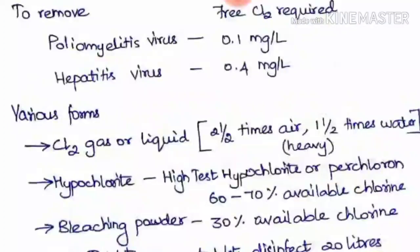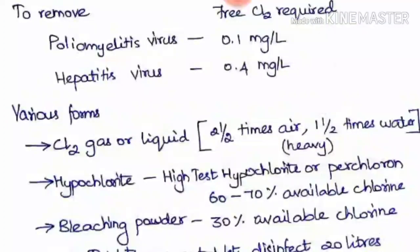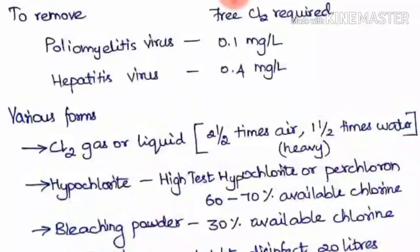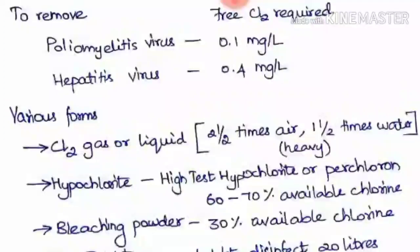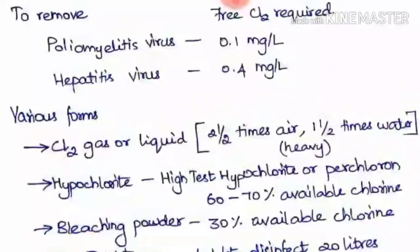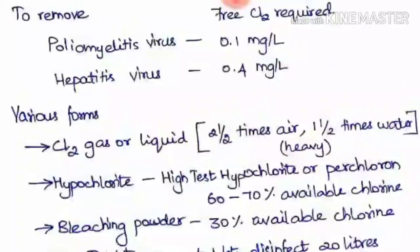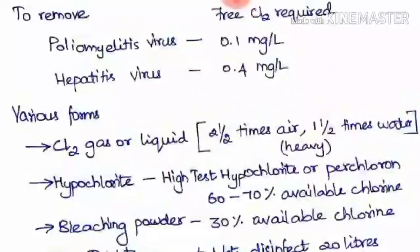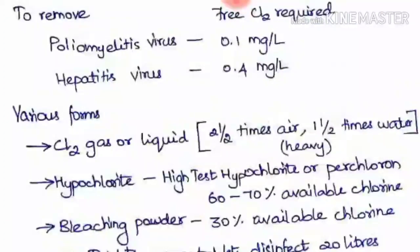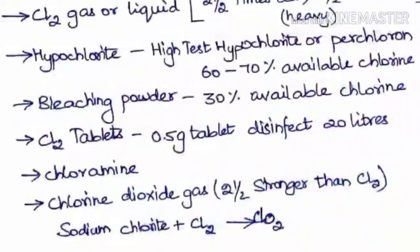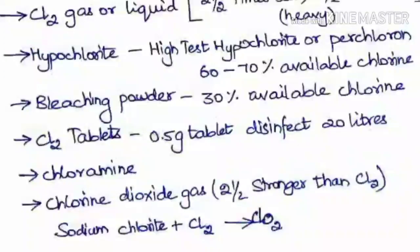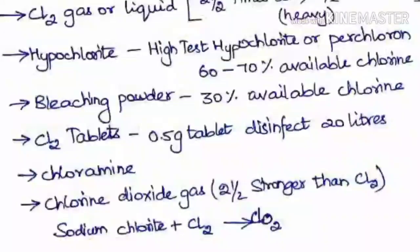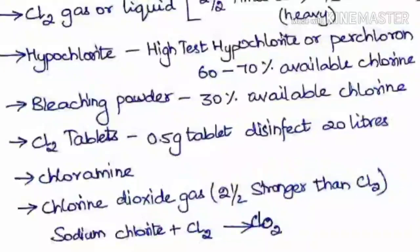Various forms of chlorine can be added. The first is Cl₂ gas or liquid — the gas is nearly two and a half times heavier than air and the liquid is one and a half times heavier than water. The next is hypochlorite, also known as high-test hypochlorite or perchloron, which contains nearly 60 to 70% available chlorine. Next is bleaching powder, which contains nearly 30% available chlorine.